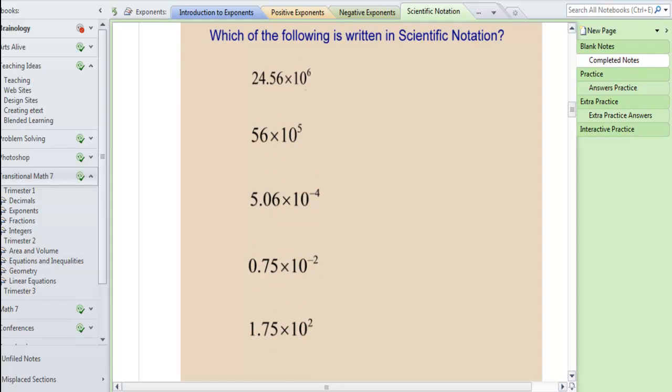So you should have no for number one because there's two numbers to the left of our decimal. You should have no written for number two because technically there's two digits to the left of the decimal, because 56 is the same as 56.0.